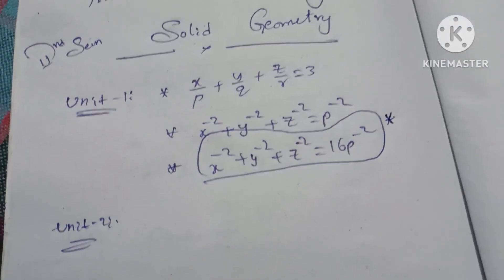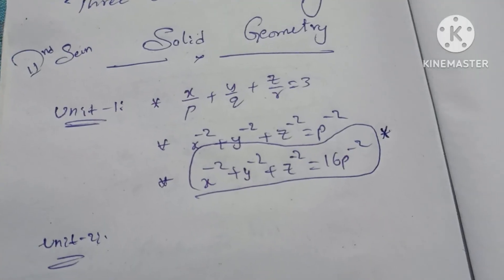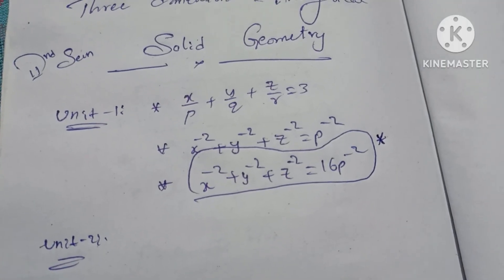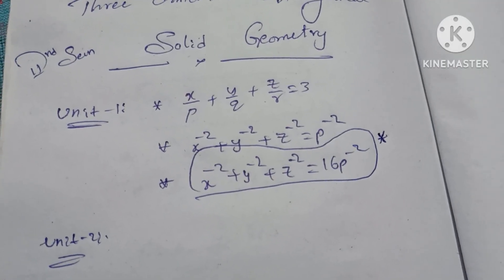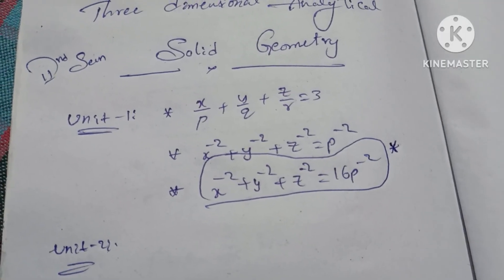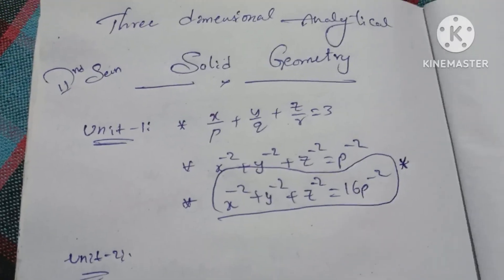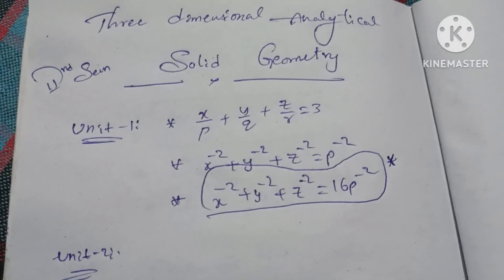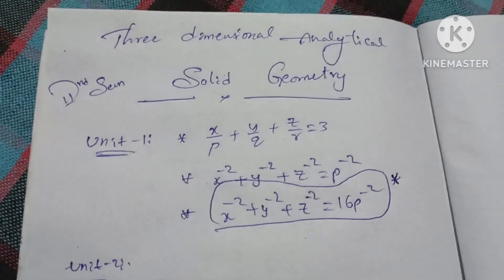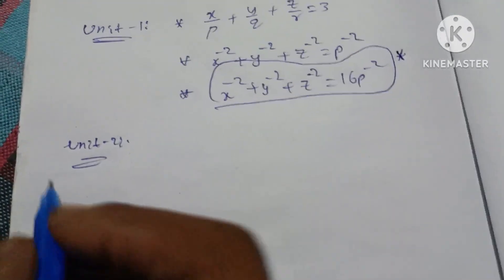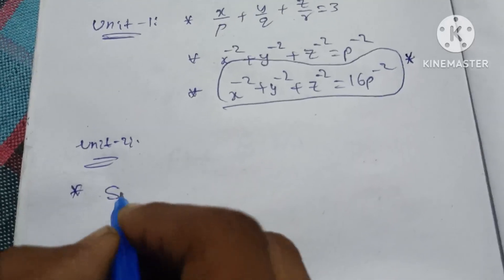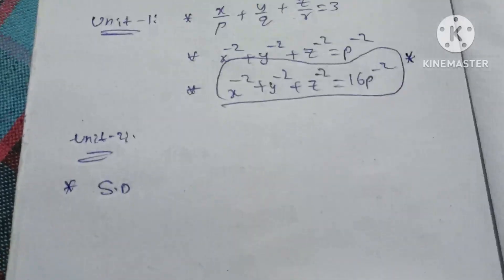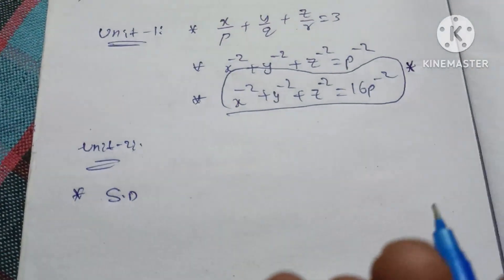Unit 2 — most of the times, you will find the shortest distance method. Unit 2: shortest distance. Just click SD and find the length.